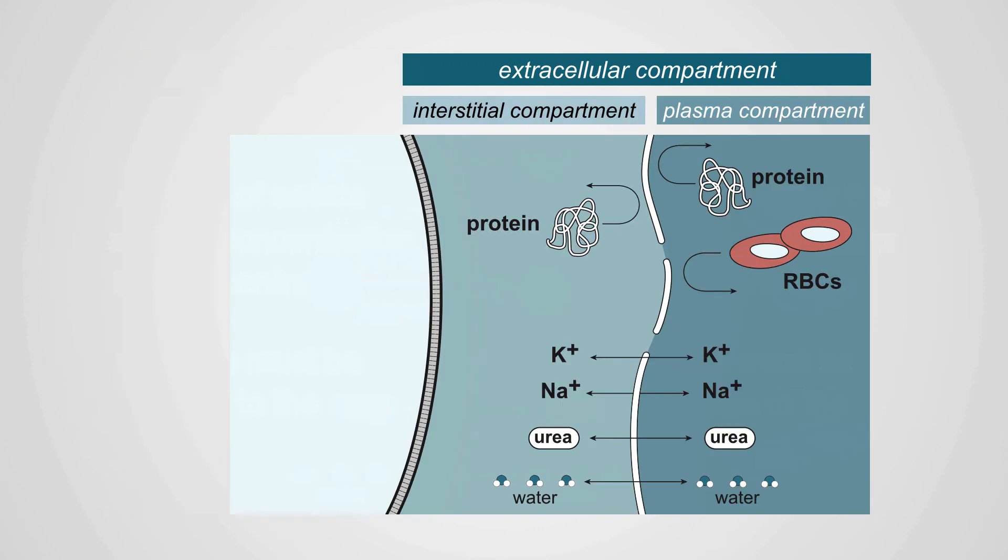The extracellular compartment is divided into interstitial and plasma spaces. The membrane between those two is the capillary wall, and it is highly permeable.